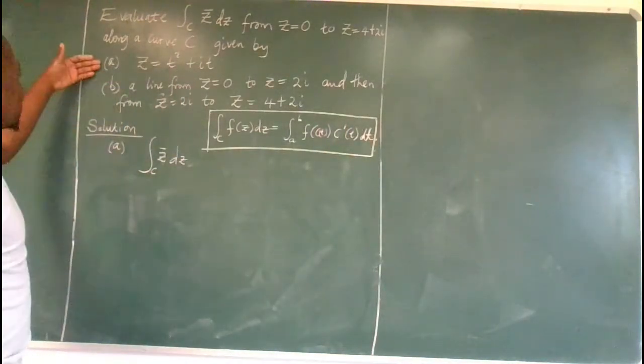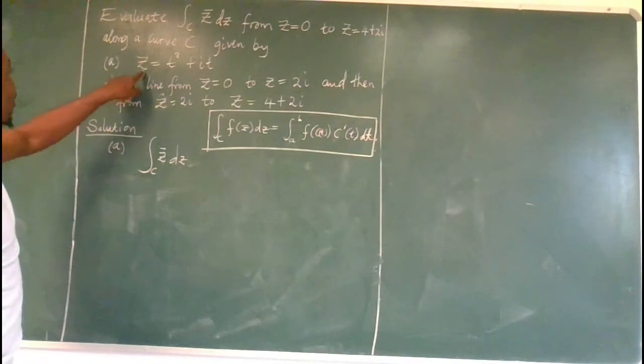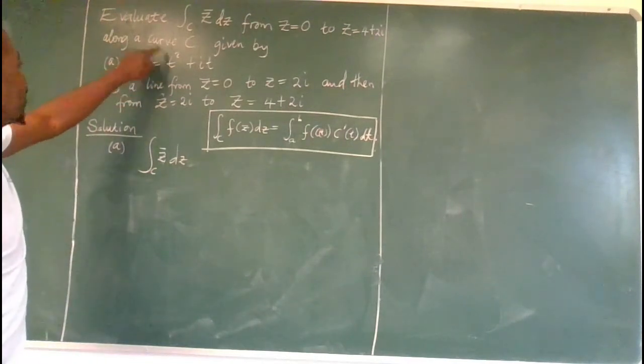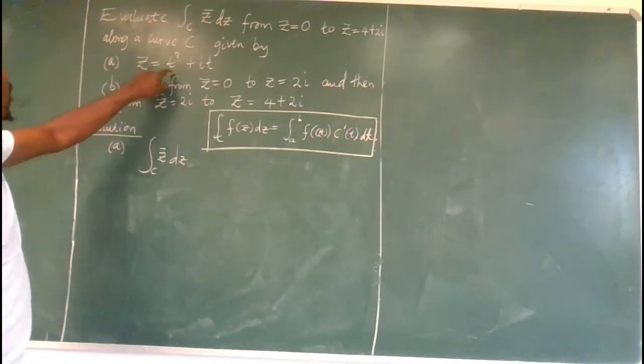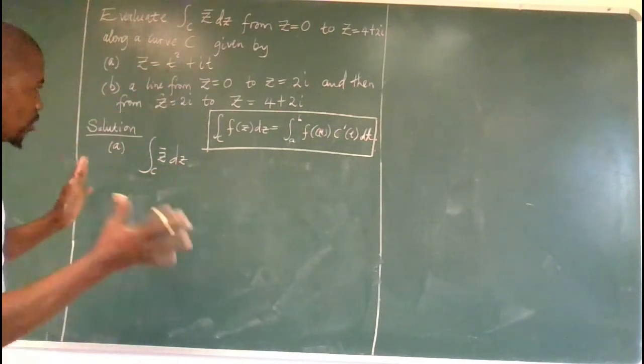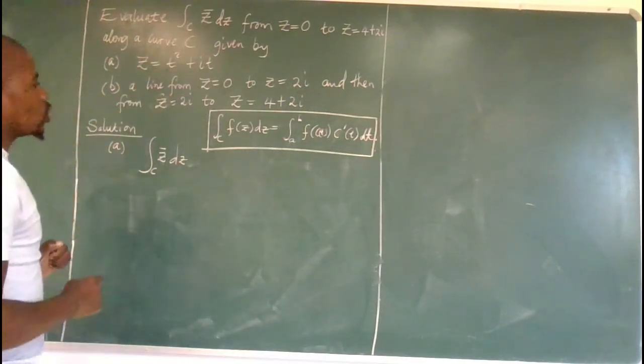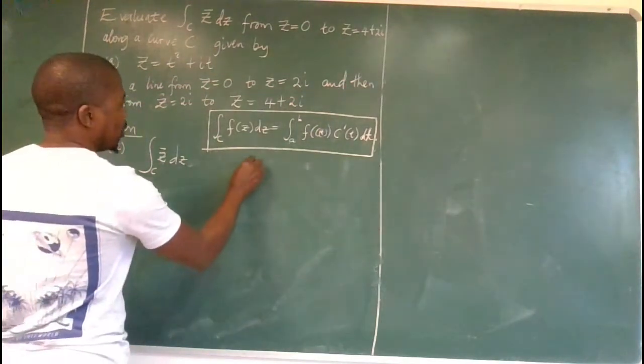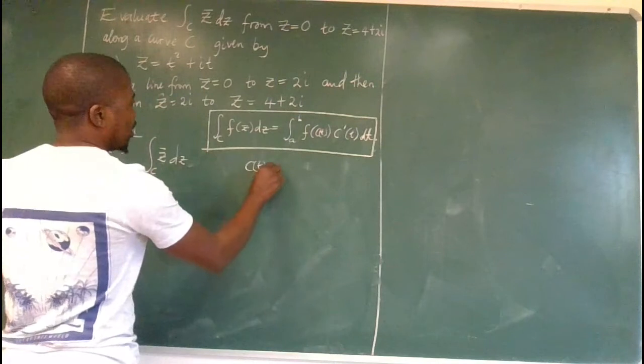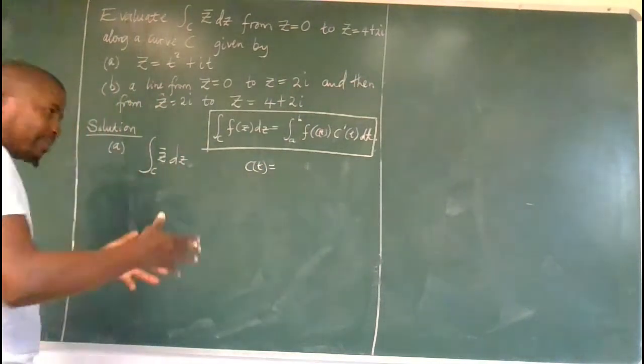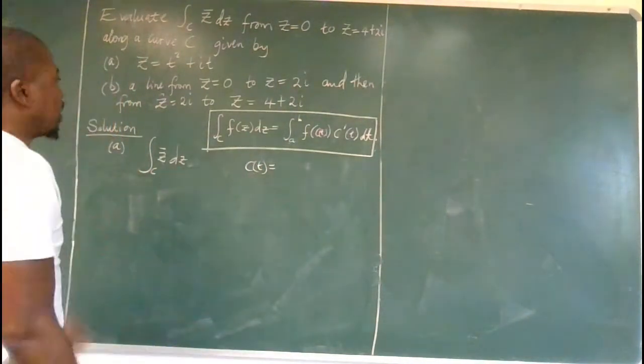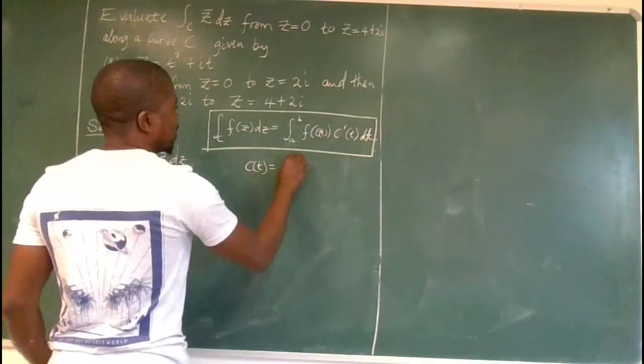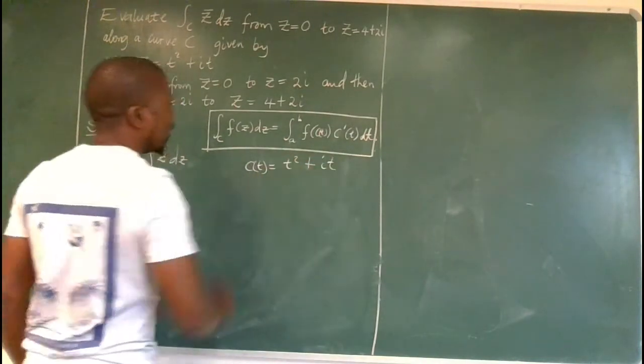So if we look at part A, we are already given the curve, the parametric form of the curve we are supposed to follow. So there is less sweat. So we already know our parameterized path. So c(t) is t squared plus i t.